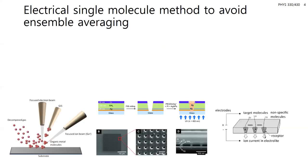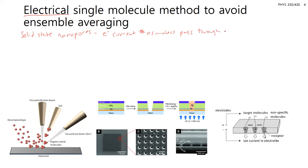I want to start by talking about using electrical signals for measuring single molecules. We're going to be focusing on solid-state nanopores, where you're measuring an electrical current as molecules pass through a very small pore. The first question is: how can we make nano-sized pores?